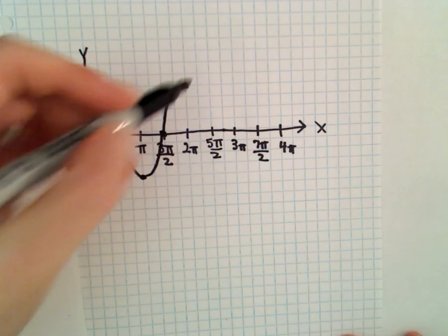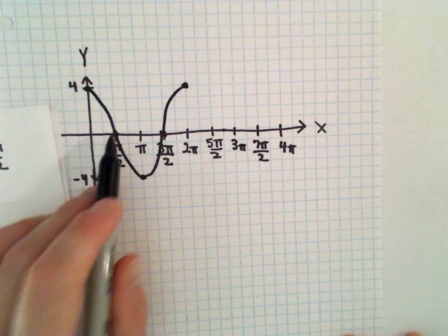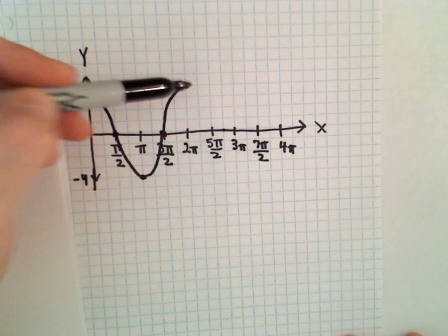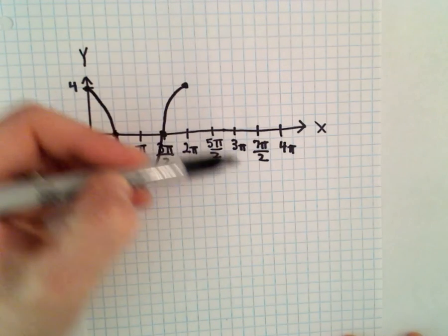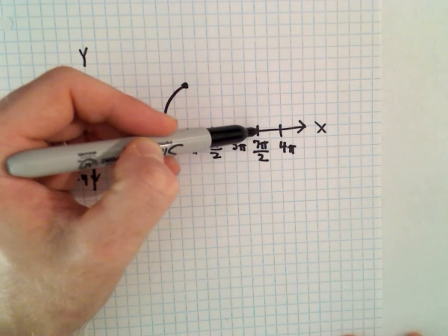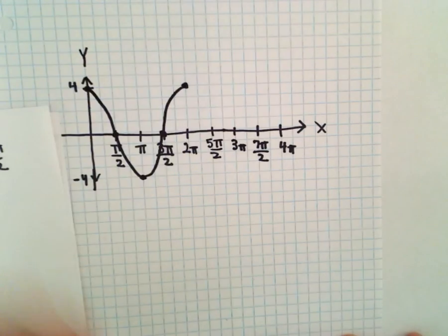Now I just repeat this again. This is why I mark them off in fours. I kind of get the high point, the midpoint, the low point, back to the midpoint, and then back to the high point.